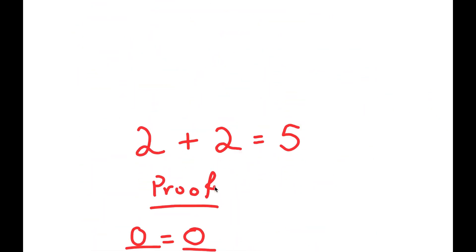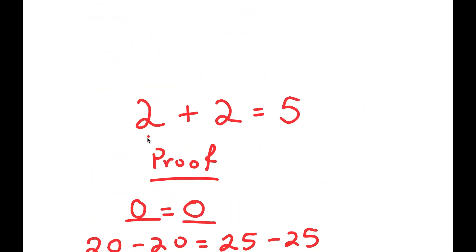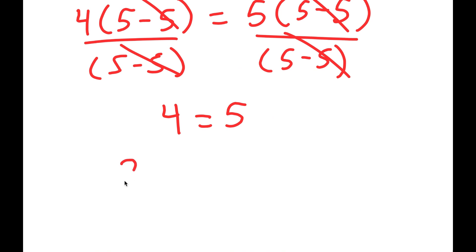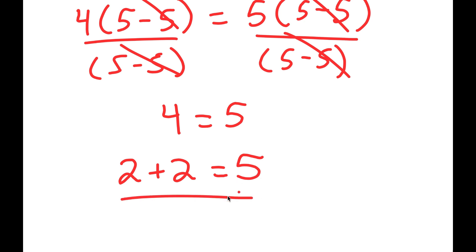Going back to our original equation, I said that I was going to prove that 2 plus 2 is equal to 5. Well, what is 4 equal to? 4 is equal to 2 plus 2. So I get 2 plus 2 is equal to 5. So I just proved that 2 plus 2 is equal to 5.